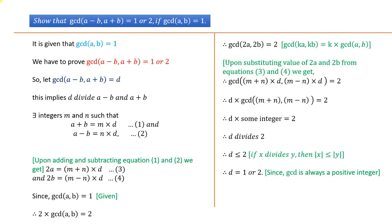Therefore d equals 1 or 2. So now we have proved that GCD of (a - b) and (a + b) equals 1 or 2.